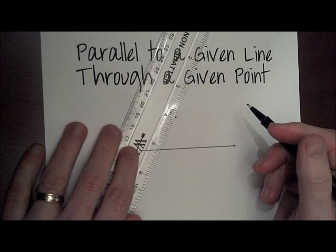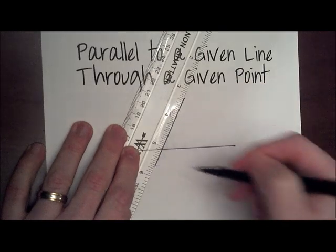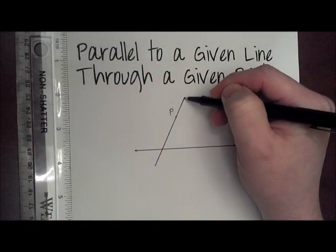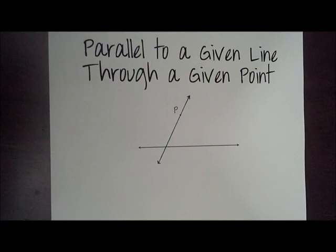Our first step is going to be to construct a transversal that goes through point P and through our line. We purposefully don't want this to be a right angle, we don't want this to be any specific case, just in general.